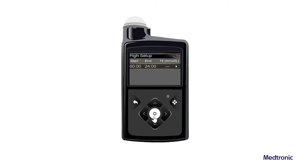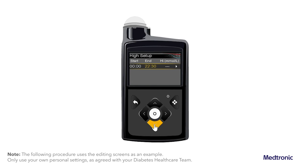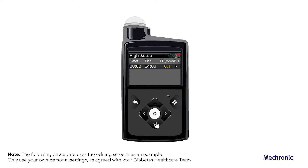Select the time segment. The end time flashes. The start time of the first time segment is always midnight. Up to 8 time segments can be set, each with a different high limit. All the time segments must add up to a 24-hour period. Set the end time. Set the high limit from 5.6 mmol per litre to 22.2 mmol per litre in increments of 0.2 mmol per litre.